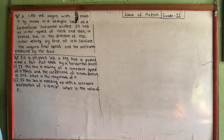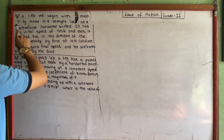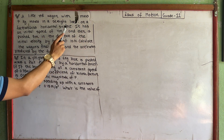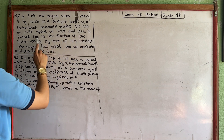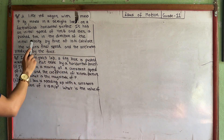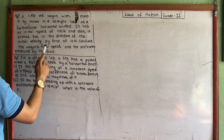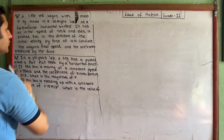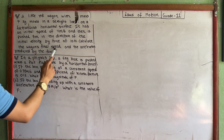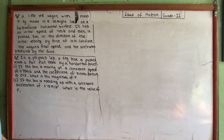So first, our question: A little red wagon with mass 7 kg moves in a straight line on a frictionless horizontal surface. It has an initial speed of 4 m/s and then is pushed 3 meters in the direction of the initial velocity by a force of 10 N.